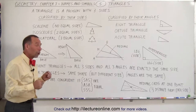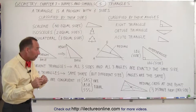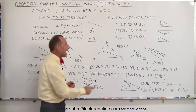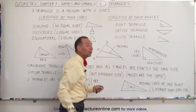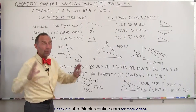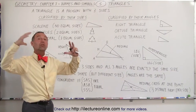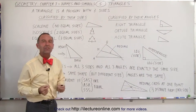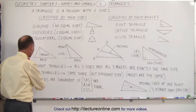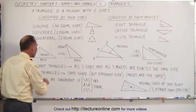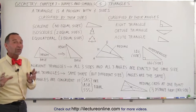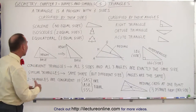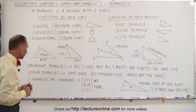Similar triangles are where they have the same shape but are of different size. In other words, only the angles are the same. So if only the angles are the same but one is a small triangle and the other is a big triangle, they have the same proportion in the sizes of their sides and are called similar triangles. But if all three sides and all three angles are the same size, we call them congruent triangles.